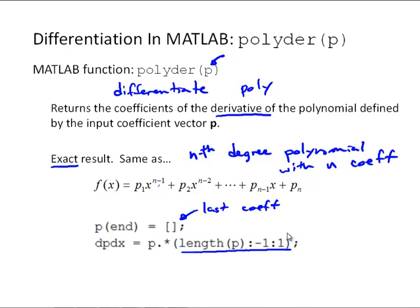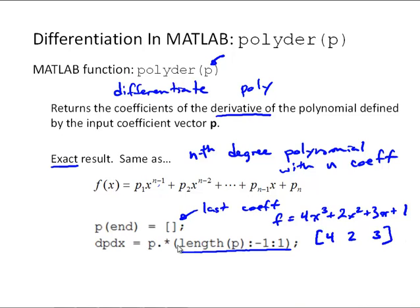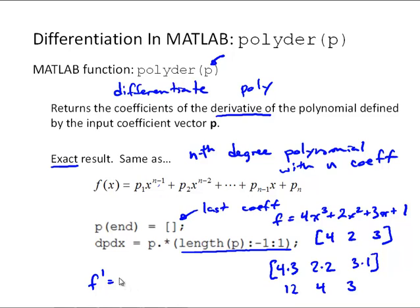For example, if we start with 4x³ + 2x² + 3x + 1, the first step leaves us with coefficients 4, 2, and 3. Then we multiply: the first element 4 times 3 gives 12, the second element 2 times 2 gives 4, and the third element 3 times 1 gives 3. We end up with 12, 4, 3, which corresponds to f′ = 12x² + 4x + 3. This is an exact analytical result for the derivative of a polynomial.